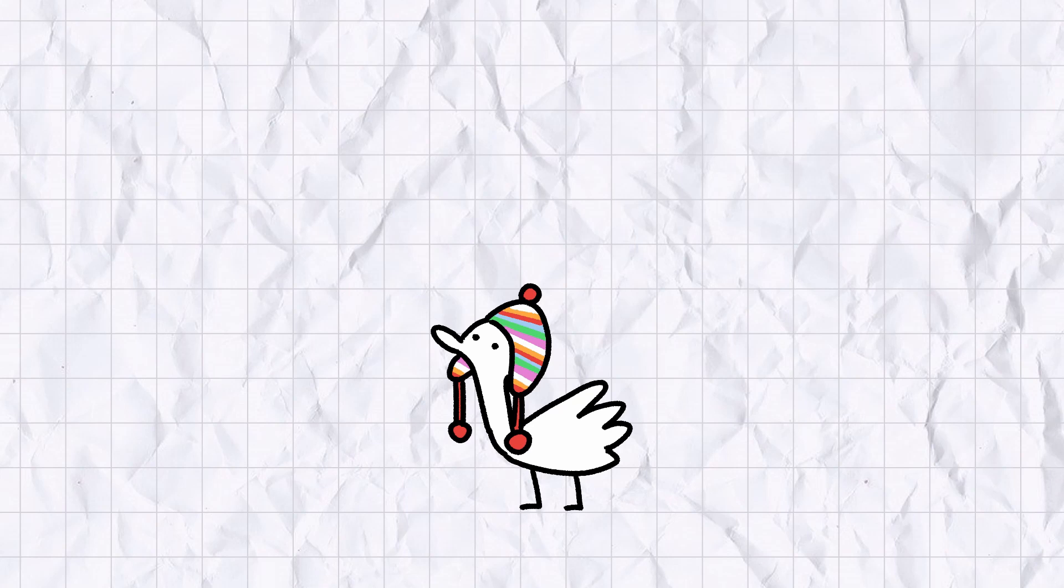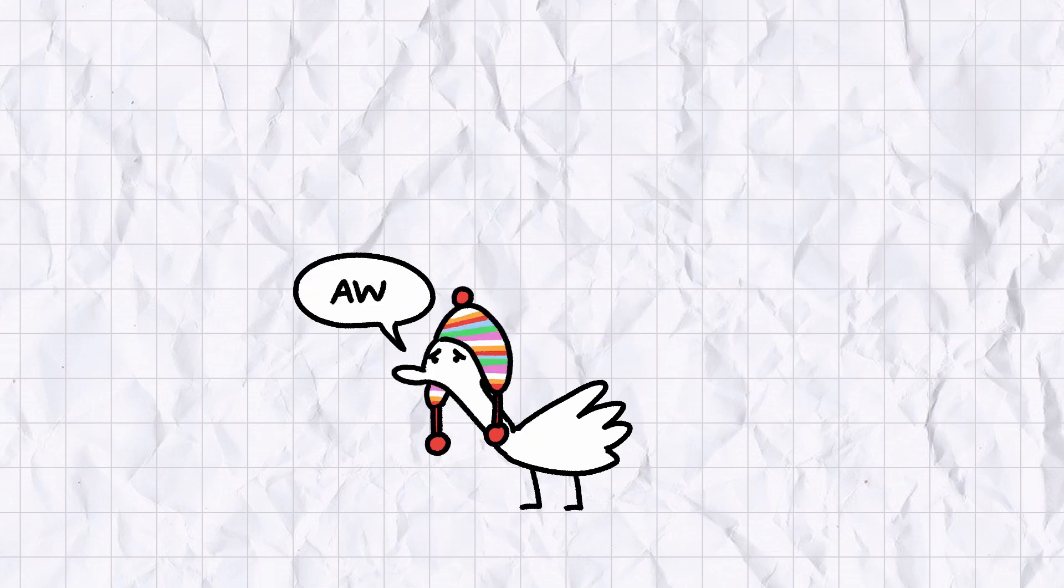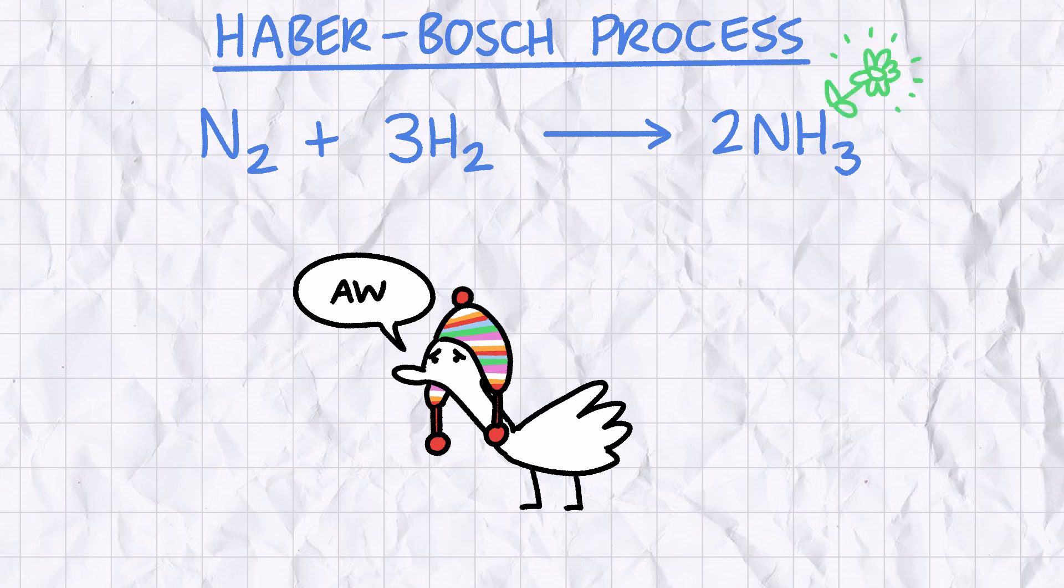But unfortunately for Peruvian seabirds, their poo isn't anywhere near as valuable as it used to be, in no small part due to the invention of the Haber-Bosch process, which allowed cheap ammonia-based fertilisers and cheap ammonia-based explosives to be produced from nitrogen gas in the atmosphere.